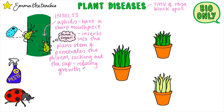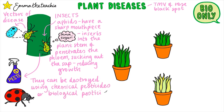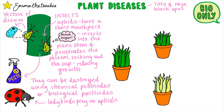Aphids can also be vectors for disease, which means they carry pathogens to the plant. Gardeners can destroy aphids by using chemical pesticides or biological pesticides. This is when predators, like ladybirds, are released into the area the plants are grown in, where they eat the aphids, removing the pest.